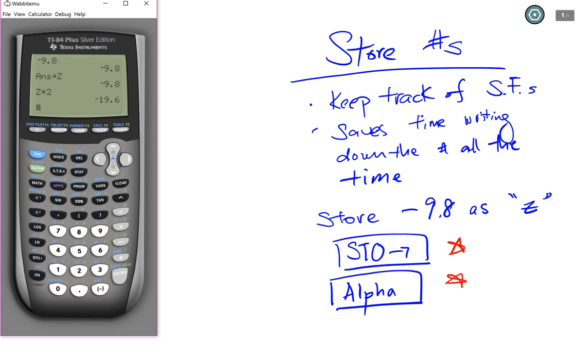You might be wondering, what if my calculator permanently remembers this number? You can always rewrite every single letter with a new number. So you don't want Z to be negative 9.8 anymore. You want it to be negative 19.6.